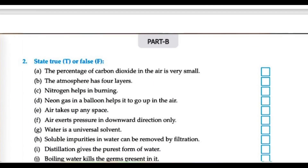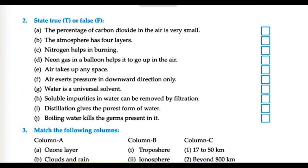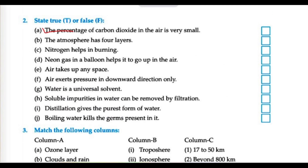Now we move to true or false. First: the percentage of carbon dioxide in the air is very small — this is true. Next: the atmosphere has 4 layers — I have just said it has 5 layers, so this is false.